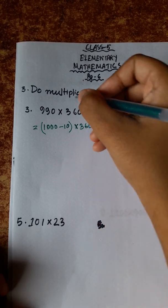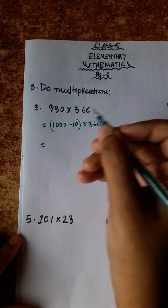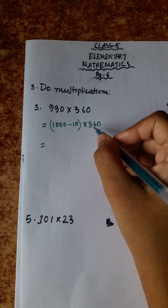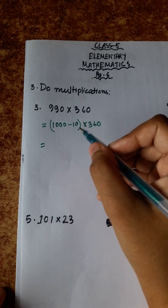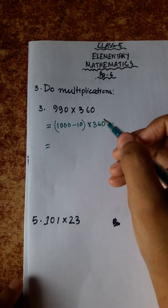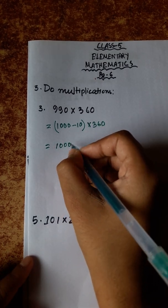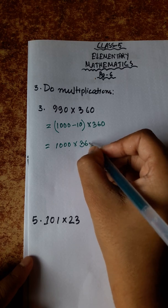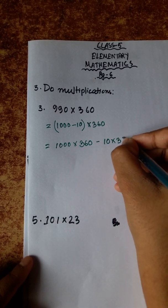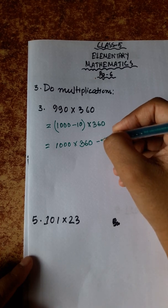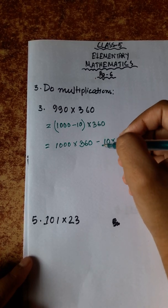So, a line is equal to this line. Now we know 360 is in the bracket and is multiplied. We need to write the same thing: 1,000 into 360 minus 10 into 360. If we have a minus sign, we have a minus sign. If we have plus, we have plus. That's how it works.